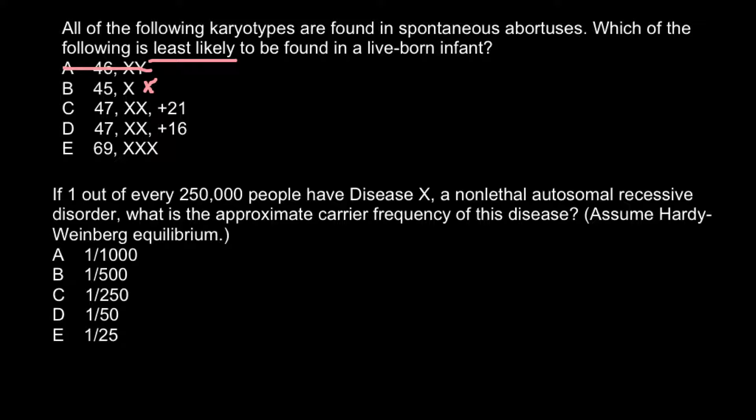So Answer B is also not our answer. Next is Answer C: 47 XX plus 21. Normally we have 46 chromosomes — 23 pairs — and phenotypically this is female because it has two X chromosomes, but it also has one extra chromosome. The extra chromosome is number 21, so this is trisomy 21, also called Down syndrome. This would be a female with Down syndrome, and we can see people with this syndrome, so this is not our answer either.